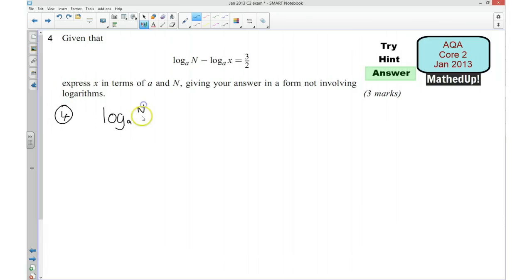I'm going to combine this by saying N divided by X is equal to 3 over 2. So I'm now going to get rid of the logarithm because I've got this a to the power of 3 over 2 is going to be equal to N over X.